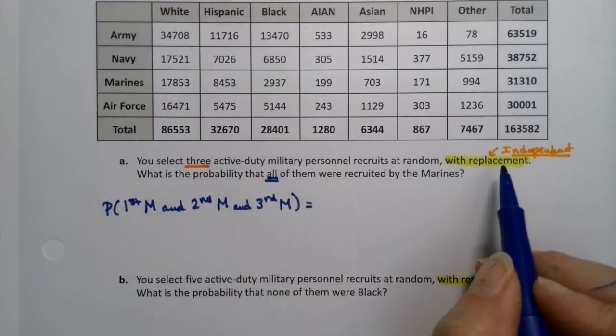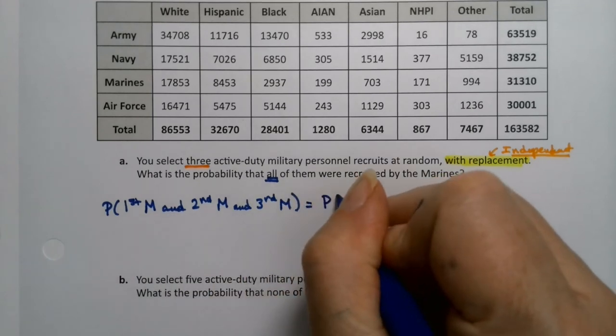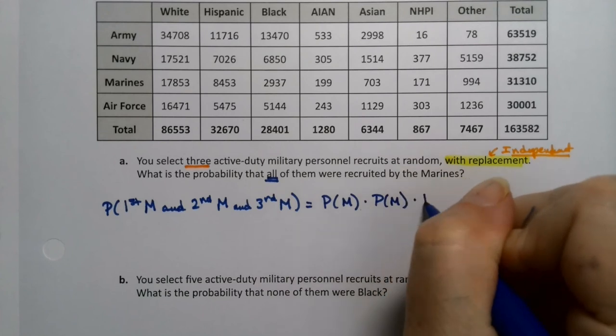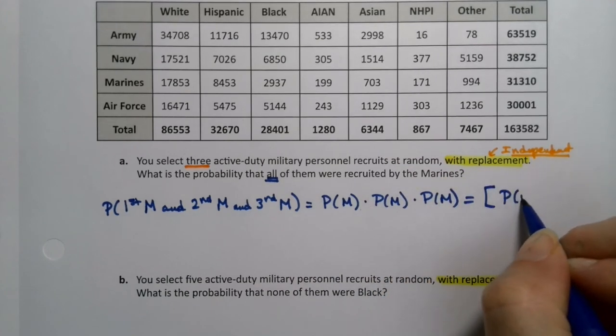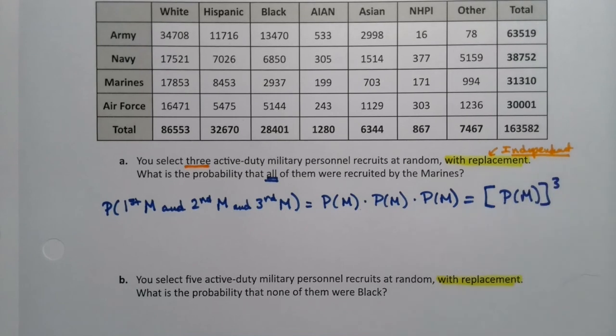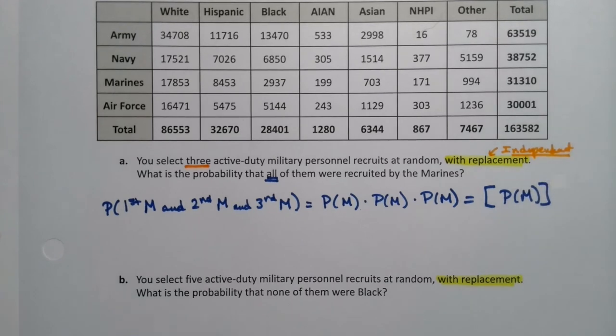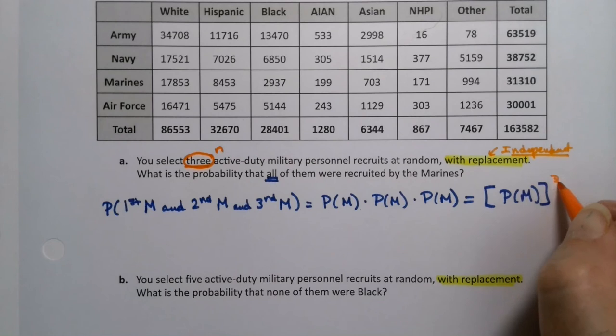According to the multiplication rule, these are independent because they're with replacement. So we'll just multiply the probability of Marine times the probability of Marine times the probability of Marine. Simple as that. In other words, you're taking the probability of Marine to the third power because there's three of them. Actually, let me make that orange so you can see here because that's your N. It's to the third power.